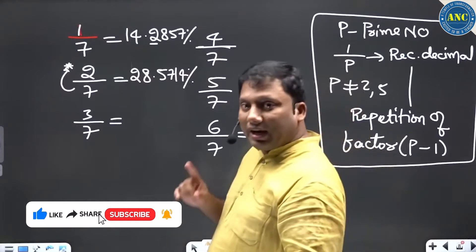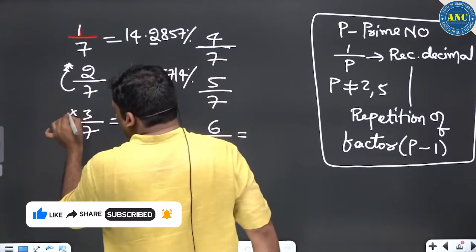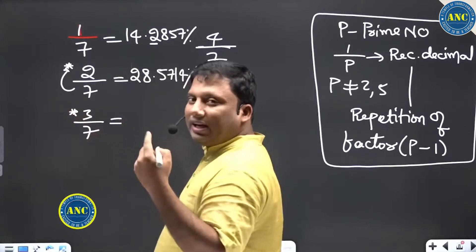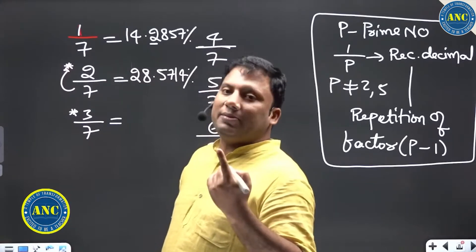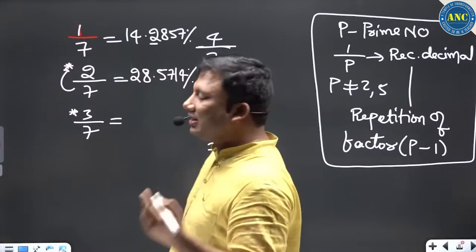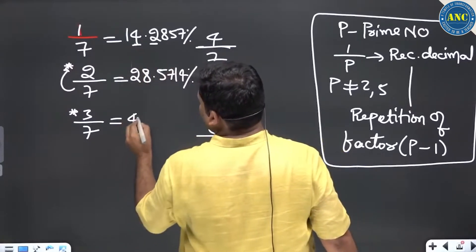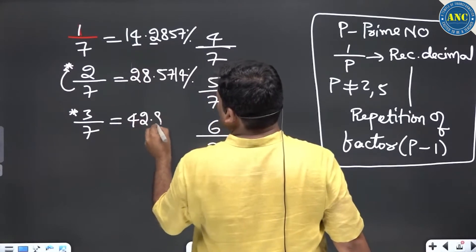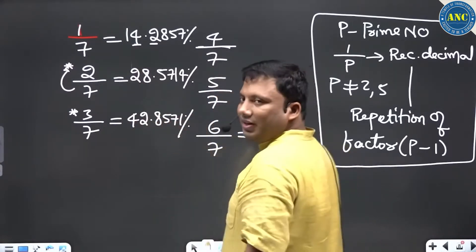Again, 3/7: take the numerator 3, multiply by 10. What is 3 tens? 30. 7 goes how many times in 30? 7 fours are 28, 7 fives are 35, so 4 times. Where is the digit? Here. Write down this digit and the next digit, dot, remaining digits in serial order: 42.8571.